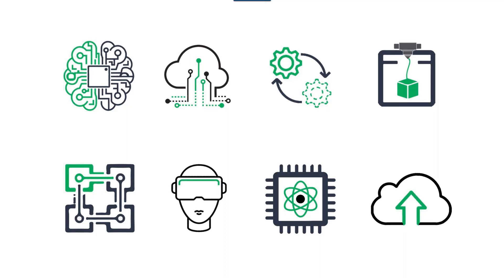Technology allows us to do incredible things. Take 3D printing — it was created and we're still discovering new uses every day. Same with augmented reality: it's been here for years and we're still figuring out how to use it. The technology is developed, then processes adapt — like quantum computing, IoT, blockchain, and machine learning. Machine learning is a great example: it's been around more than ten years but now it's booming. That's why our main focus is on technology in innovation.